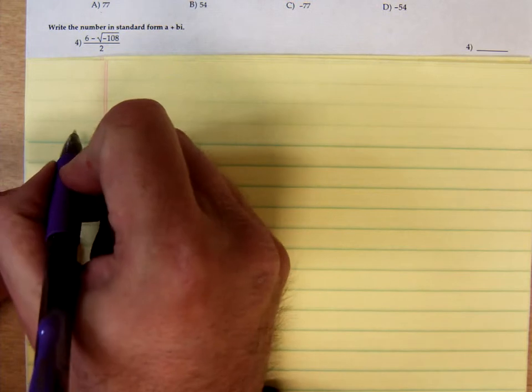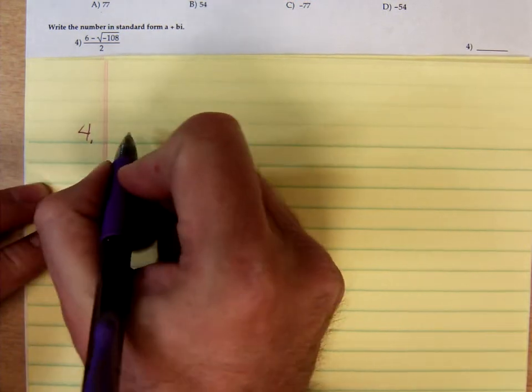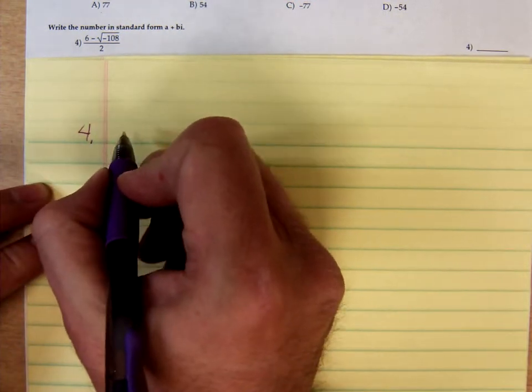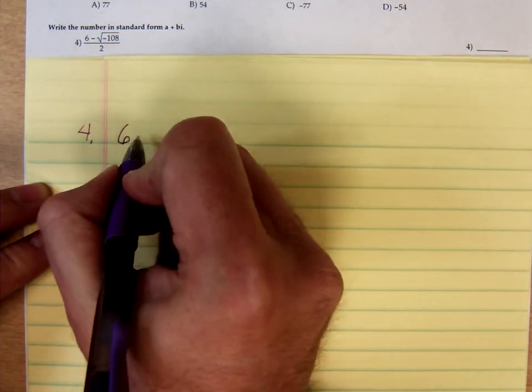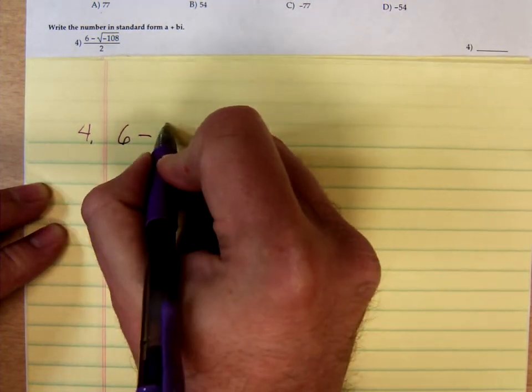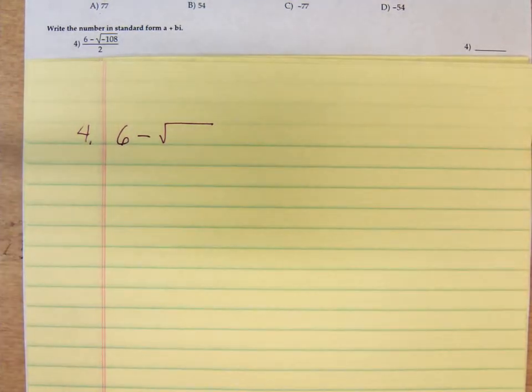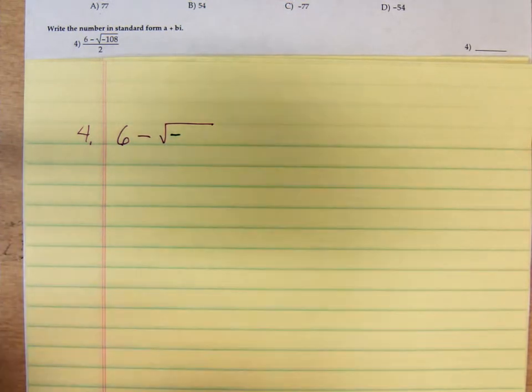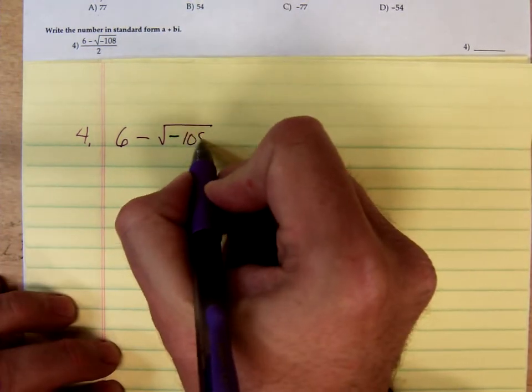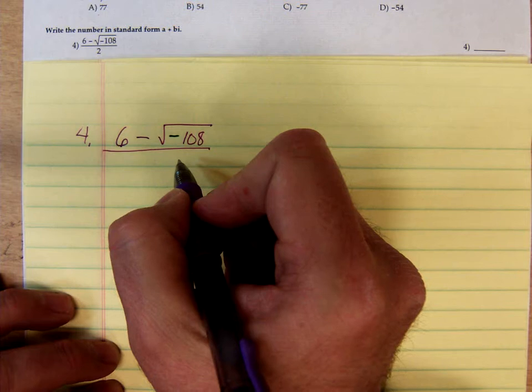We're up to problem number 4 which says write this number in standard form A plus Bi. You have 6 minus the square root of negative 108 all over 2.